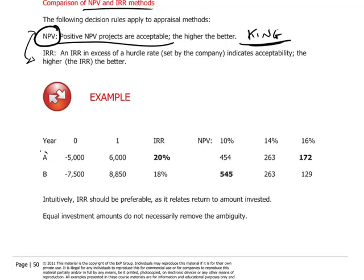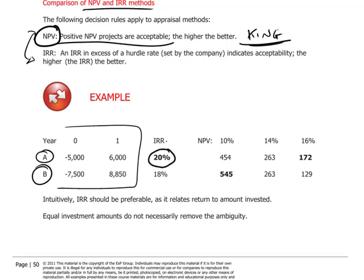Consider two projects A and B with simple cash flow profiles: $5,000 is invested and $6,000 comes back in year one; and in the other, $7,500 is invested and returns $8,850. The IRR of A is higher. However, if a 10% discount rate is applied, the NPV of project B is actually higher than project A. If the cash flows are riskier — say at a 16% discount rate — then the NPV for A is higher.